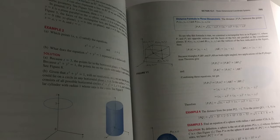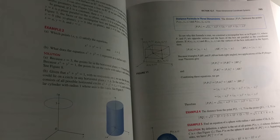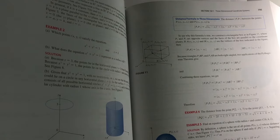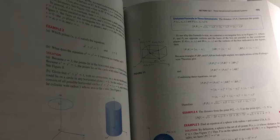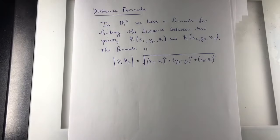Then he applied the Pythagorean theorem two or three times, whatever was necessary to get this distance formula. The distance formula in R2 is really just the Pythagorean theorem. So we have this distance formula. I'm going to do an example with this, and then we'll do the next topic.